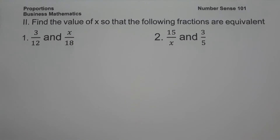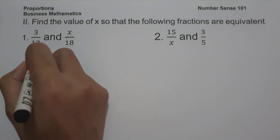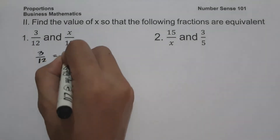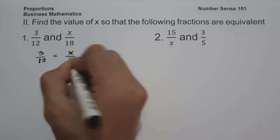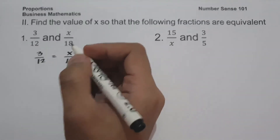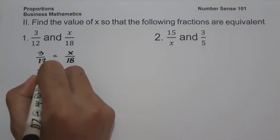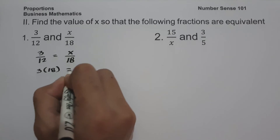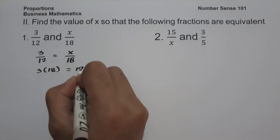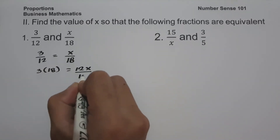On the second set of examples, we are going to find the value of x so that the following fractions are equivalent. On number one, we have 3 over 12 and x over 18. To find the value of x, let us set up 3 over 12 equals x over 18, and cross multiply: 3 times 18 equals 12 times x, giving 12x. Let us divide both sides by 12.